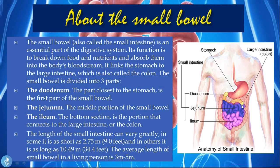We then have the jejunum, which is the middle portion of the bowel — shown here in blue. And finally, we have the ileum, which is the bottom section and the portion that connects to the large intestine or colon. This last section, shown in a violet-pink color, connects to the colon.